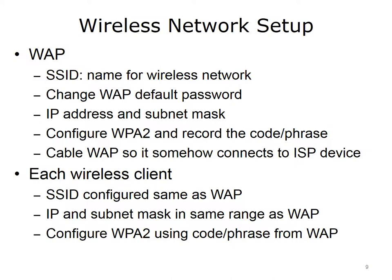One of the things to be set is the Service Set Identifier, or SSID. This is the name for the wireless network — basically the same thing as the workgroup name in a wired network. Next, change the WAP's default password, which can be found on the internet. After that, supply the WAP with an IP address and subnet mask. Ensure that the IP address and subnet mask are in the range of the computer and other devices that will connect to the wireless network. Next, configure WPA2, a wireless security protocol. Write down the code or phrase that you use — you'll need it later when configuring wireless clients.